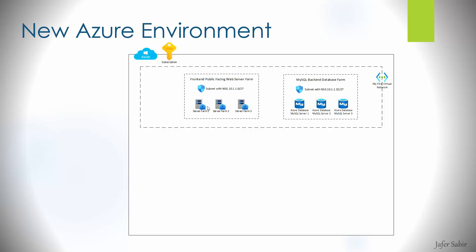With NSGs at subnet level, traffic between the subnets is controlled by the NSG with less management overhead. If you need more granular control — for example, specific ports and IP addresses between particular server farms — you would attach NSGs to the individual servers. You can additionally deploy a virtual firewall appliance, which gives you security protection, logging, analytics, and all the extra features firewalls provide. We also add a load balancer with a public-facing IP address and a web application firewall to protect the servers from attacks.